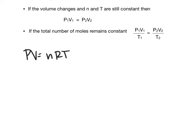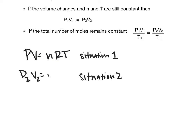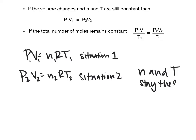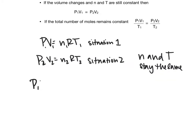If we think about a system where P1V1 equals NRT1 for situation one, and P2V2 equals NRT2 for situation two, then if N and T stay the same, P1V1 equals NRT, which equals P2V2, because NRT equals a constant. So we can rewrite this as P1V1 equals P2V2.